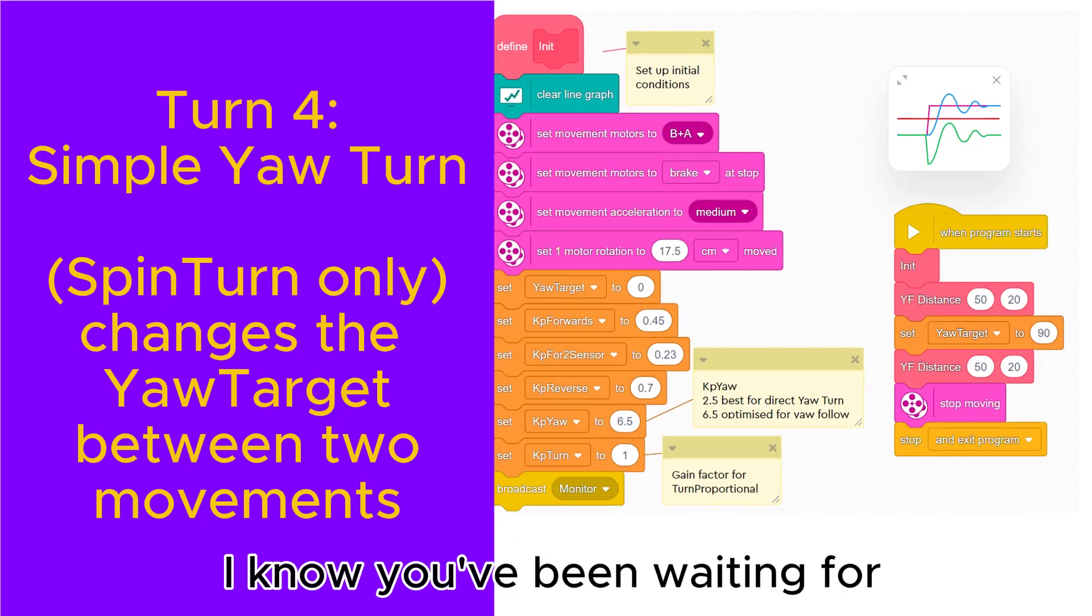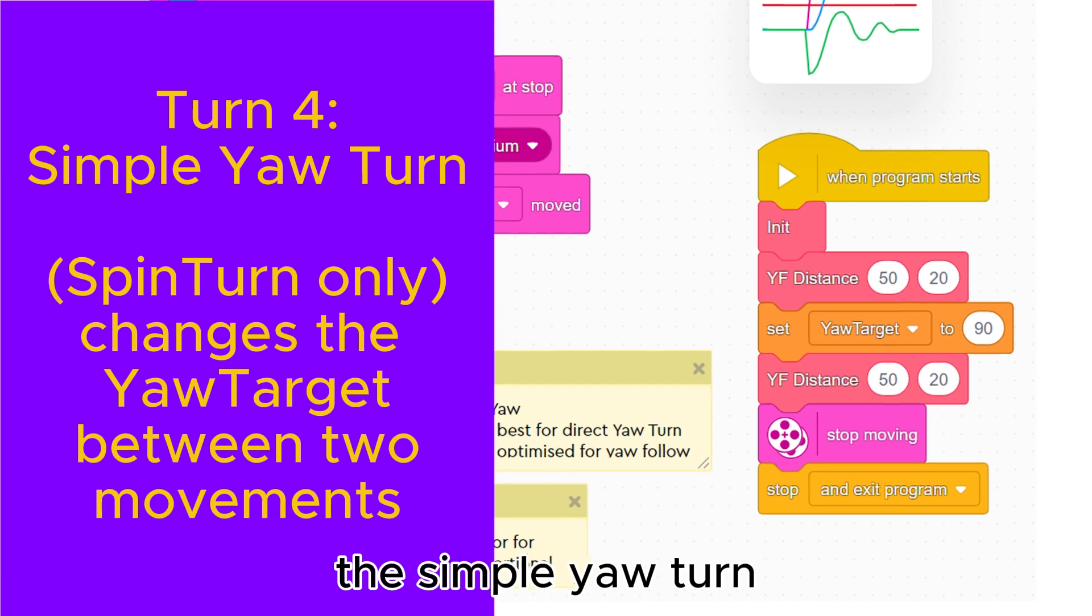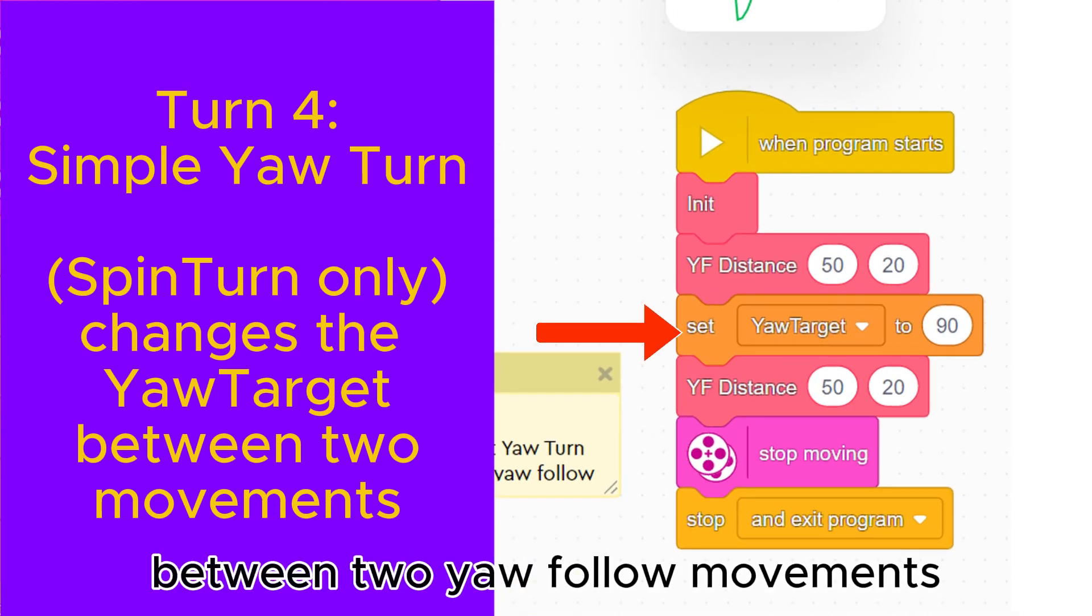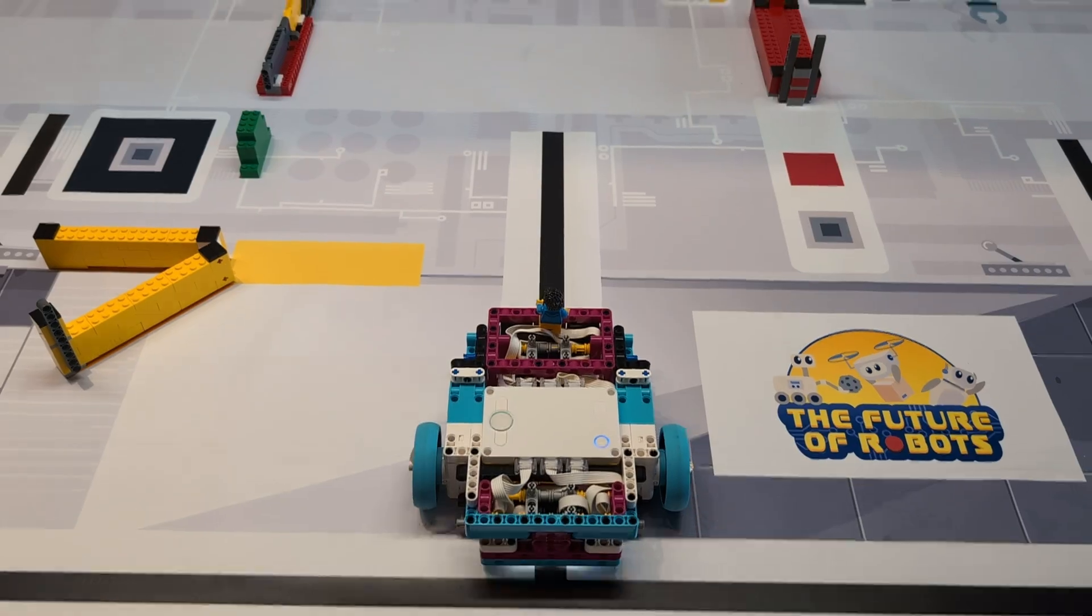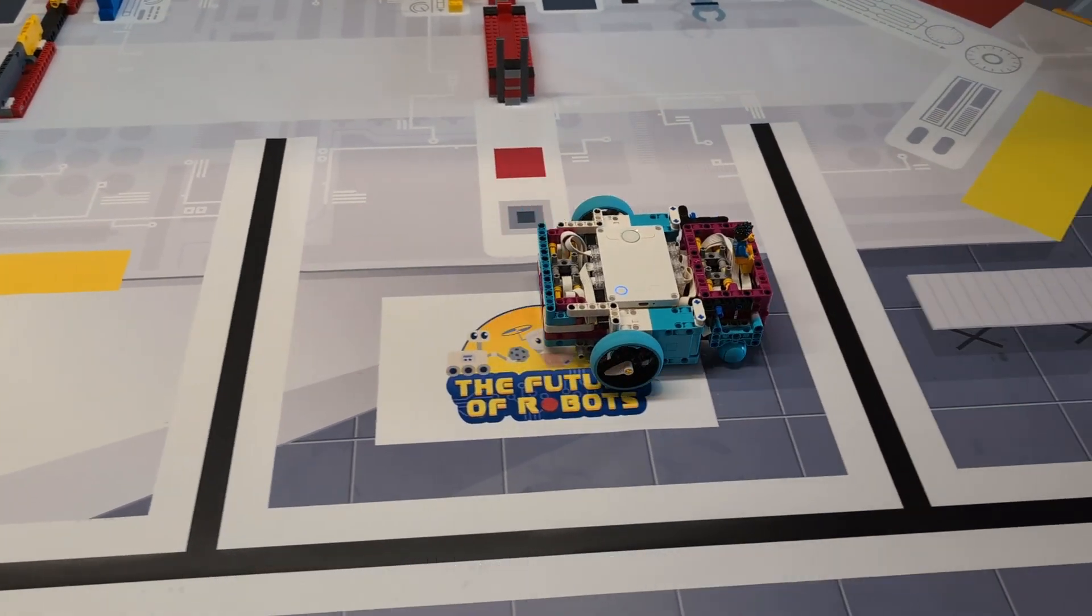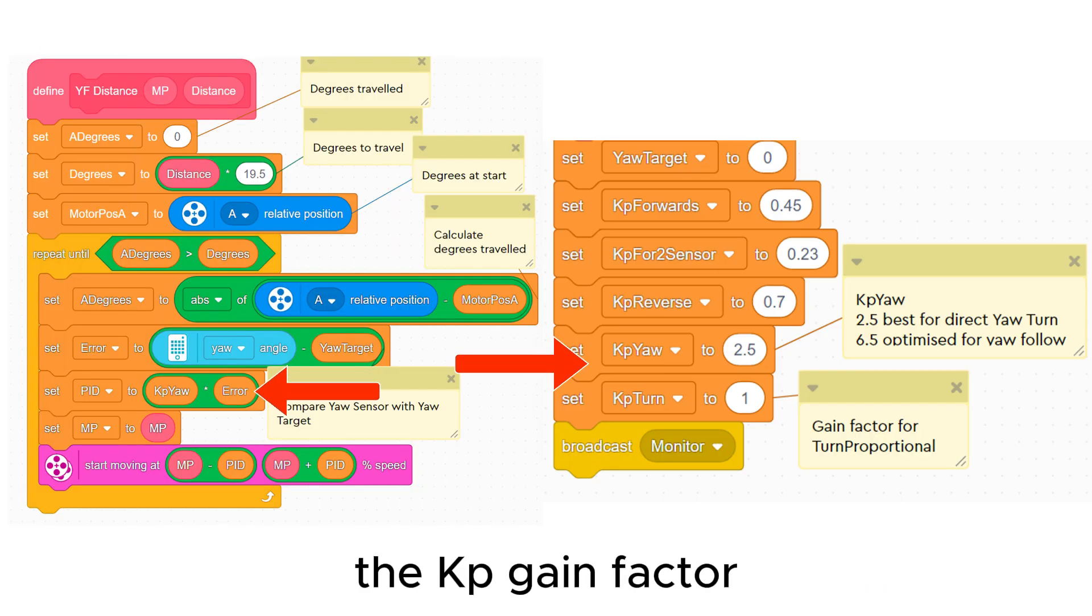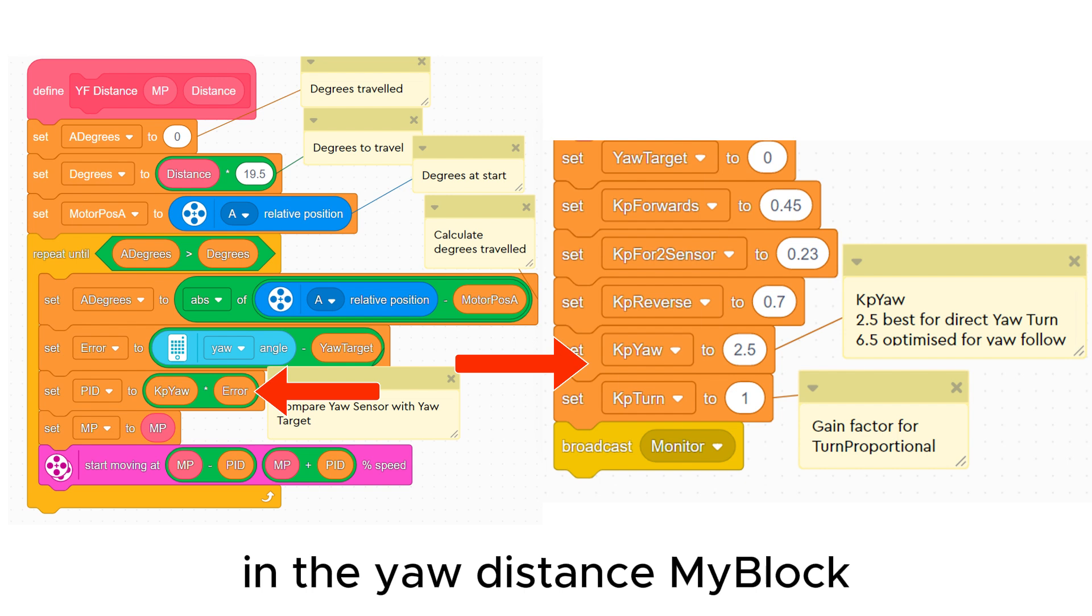Now this is the turn I know you've been waiting for, the simple yaw turn. All we do is rudely change the yaw target between two yaw follow movements. Well that doesn't look like much of a turn, although it produces a nice looking line graph. The KP gain factor in the yaw distance my block was optimised for yaw following.